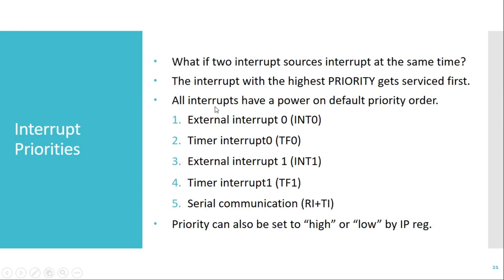All interrupts available in the 8051 have specific priorities. If two interrupt sources occur at the same time, the interrupt with the highest priority will get serviced by the CPU and the other will be discarded. On reset, the default priority is: external interrupt 0 (highest), then timer 0 overflow, then external interrupt 1, then timer 1 overflow, and finally serial communication interrupt. If required, this default priority order can be changed using the IP SFR, or Interrupt Priority SFR.